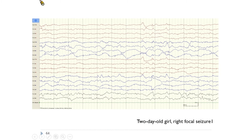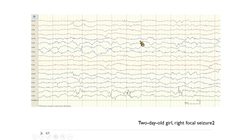This is a two-day-old girl with an uncomplicated birth, having right focal seizures at day two, and transferred to our ICU. In this EEG using a longitudinal bipolar montage at sensitivity of seven, there is obviously suppressed activity over the left brain and continuous activity of mixed frequencies over the right brain. The left side is flat; the right side is continuous.